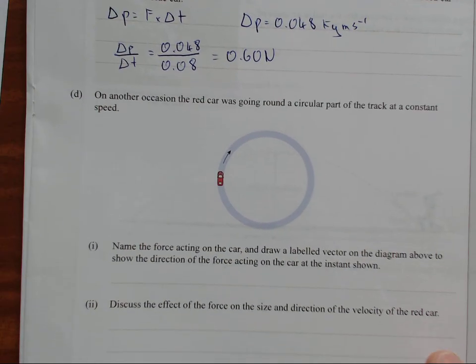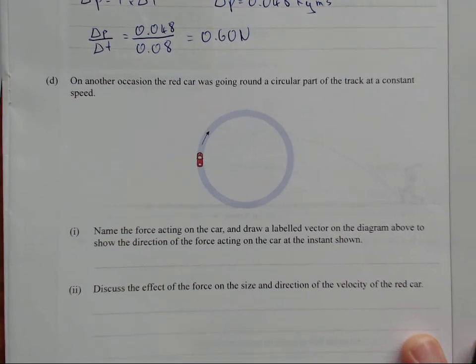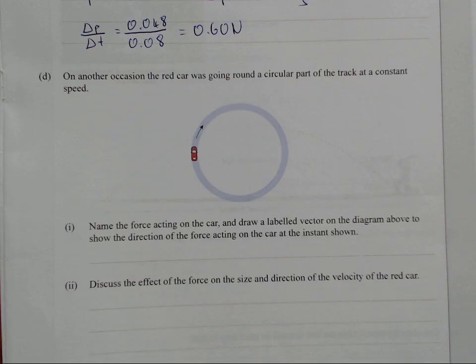On another occasion, the red car was going around the circular part of the track at a constant speed. Name the force acting on the car and draw the labeled vector on the diagram above to show the direction of the force acting on the car at the instant shown.